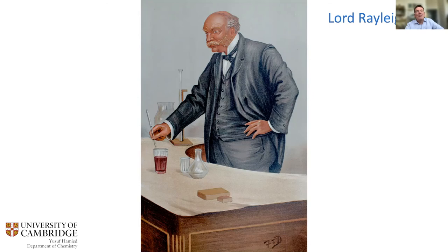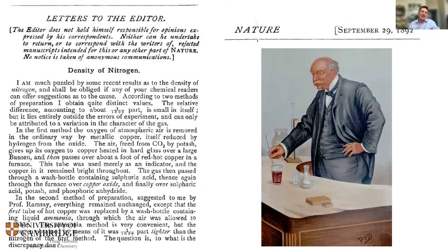He measured hydrogen and oxygen with no problem, but with nitrogen he had a discrepancy. He prepared nitrogen in two different ways: one by removing other gases from air, the other by chemical preparation. The two densities were not quite the same — an error of one part in a thousand. He published in Nature asking readers if they could suggest what caused this discrepancy.